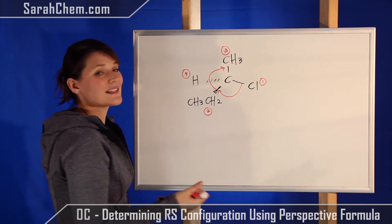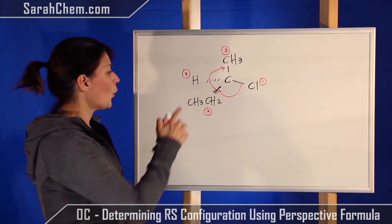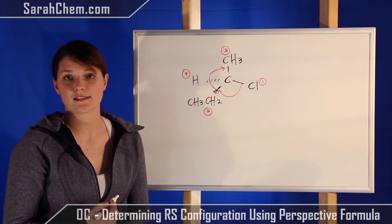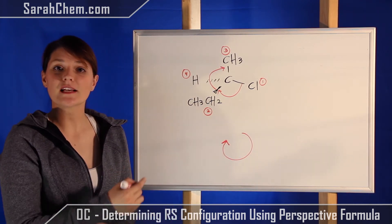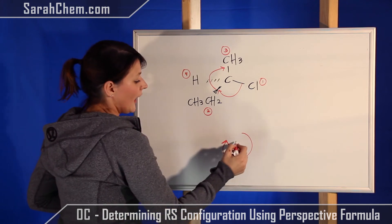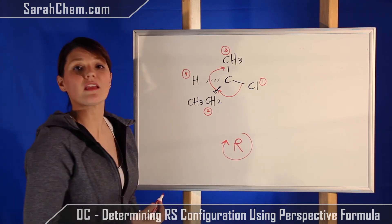Remember that it's completely fine to cut across four when you're trying to get from one number to the next. So ultimately my arrow is moving in this direction here. Because I'm moving in a clockwise fashion, I know that this is going to be the R configuration.